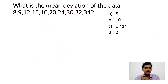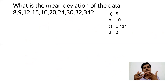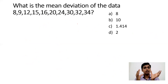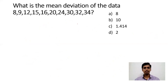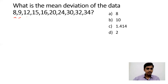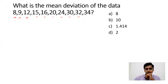What is the mean deviation of the data: 8, 9, 12, 15...? First, understand the difference between mean deviation and standard deviation. To find mean deviation, first calculate the mean of the series. Adding all values: the sum is 200, divided by 10 numbers, giving a mean of 20.